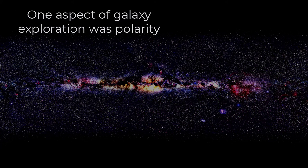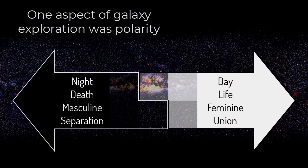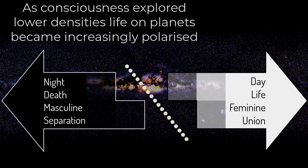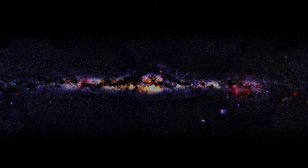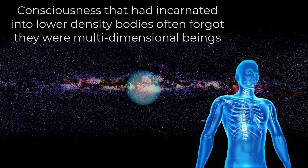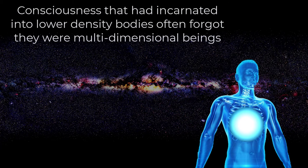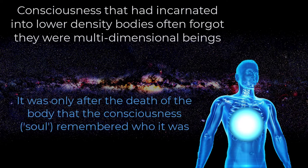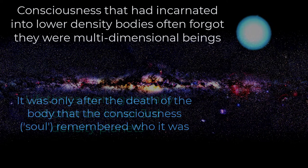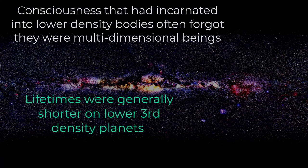One aspect of galaxy exploration was polarity — night and day, death, life, masculine, feminine, separation, union. Polarities were more extreme at lower densities, and as consciousness explored lower densities, life on planets became increasingly polarised. Consciousness that had incarnated into lower densities often forgot they were multidimensional beings. It was only after the death of the body that consciousness or soul remembered who it was. Lifetimes were generally shorter on lower third density planets.